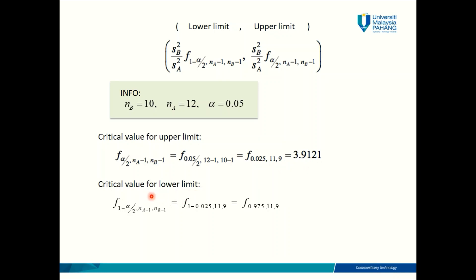Now for the critical value for the lower limit, we have 1 minus alpha over 2, which gives us 0.975, with degrees of freedom 11 and 9. If you go through your formula book from page 40 to page 55, you will not find any page that has alpha equal to 0.975, because it is not provided in the book. If they were to provide a table for all alpha values, the book would be too thick.